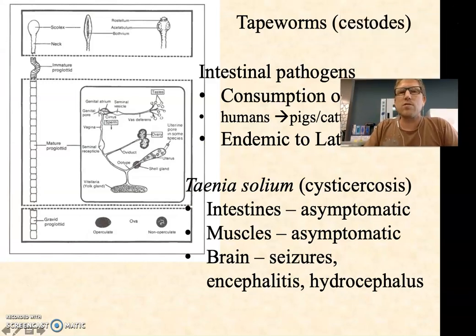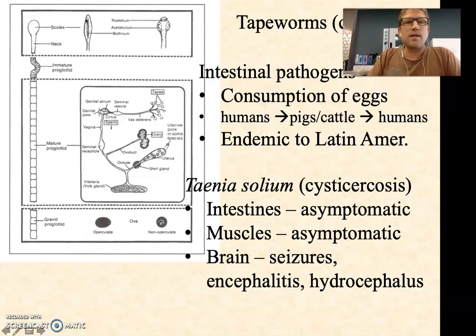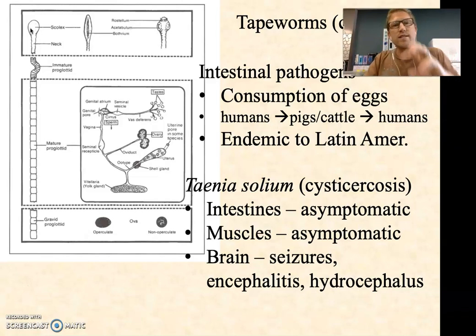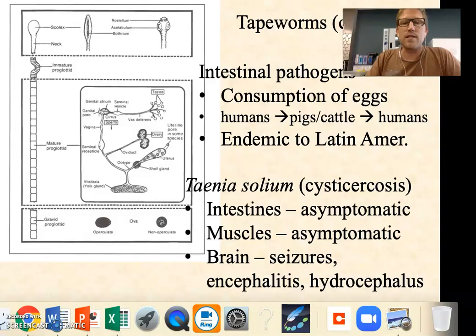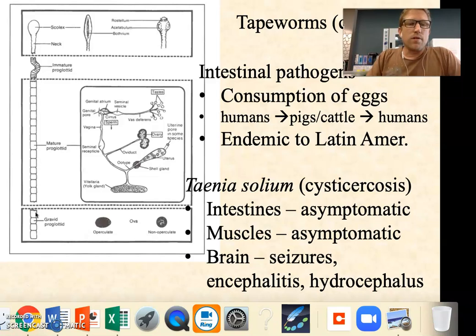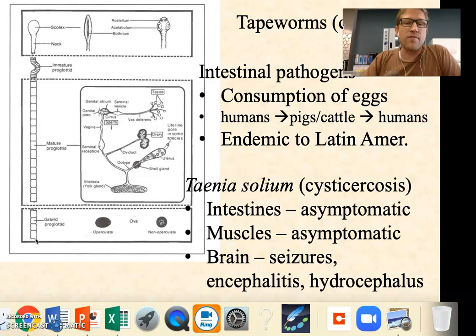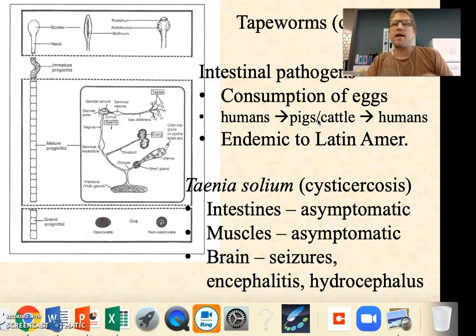Tapeworms, also called cestodes, are a little bit flatter and they're segmented. You can see a scolex, which is the head, and it's got this really scary-looking set of essentially teeth called the rostellum that help it grab on and latch onto the intestinal wall. They've got a neck region and then a series of units called proglotids, which are little reproductive structures. The proglotids at the very end — the last handful — are gravid, meaning they're carrying fertilized eggs. These are the ones breaking off in the feces and releasing eggs into the environment.